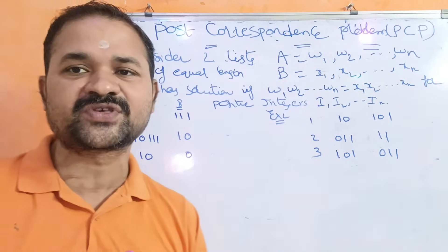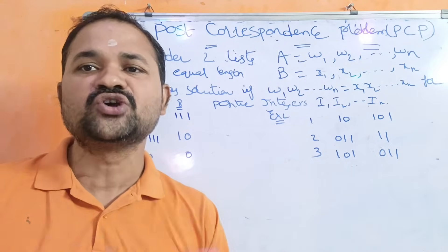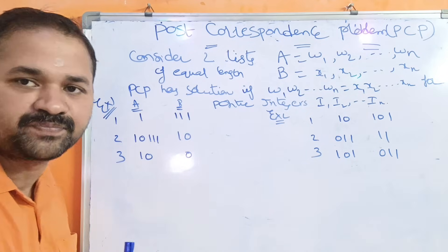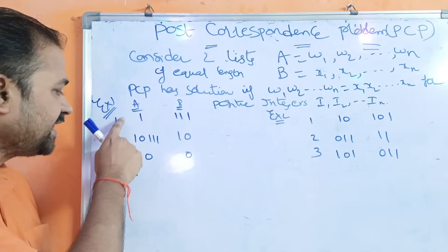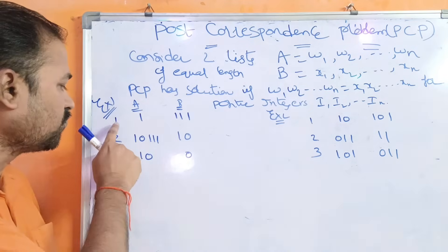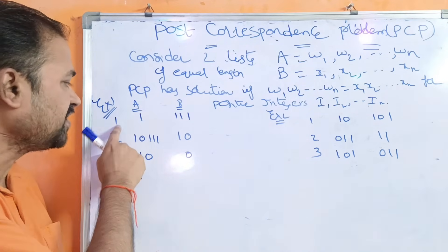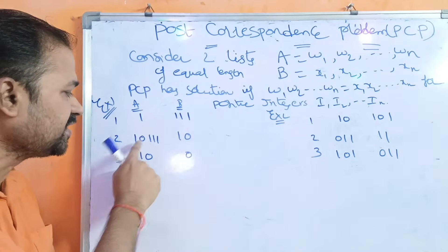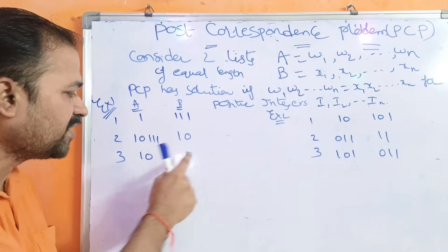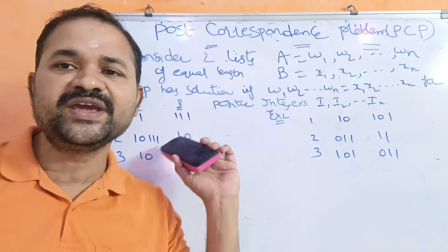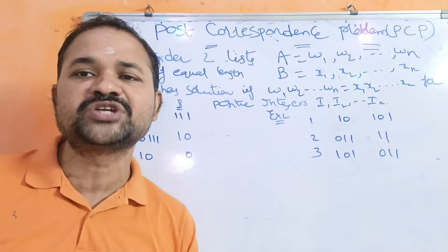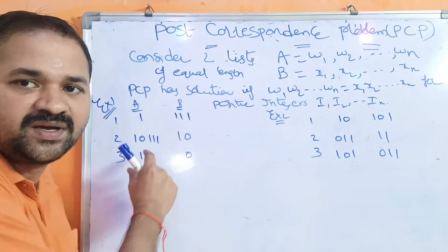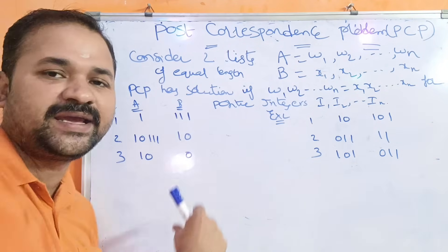So here we have two problems. Let us check whether these two problems have a solution or not. Let us see the first problem. Here we have two lists A and B, and each list contains three strings. So we have entries like 1, 3, 4 and so on. This is A list, this is B list. Now we have to check whether this problem has a solution — that means the strings formed by A must be equal to the strings formed by B.